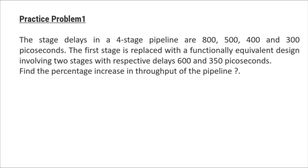So let's do some practice problems. The first practice problem is: the stage delays in a four-stage pipeline are 800, 500, 400, and 300 picoseconds. The first stage is replaced with a functionally equivalent design involving two stages with respective delays of 600 and 350 picoseconds. Find the percentage increase in throughput of the pipeline.